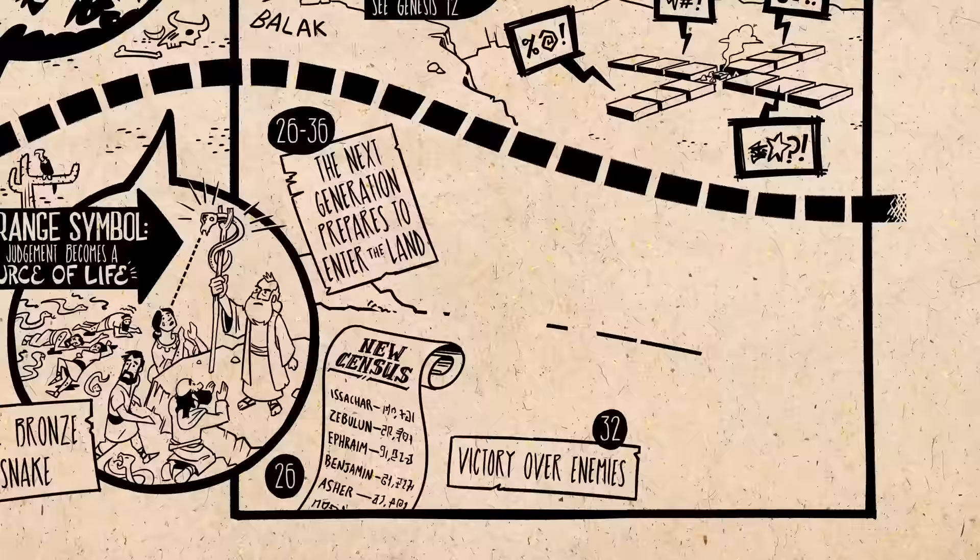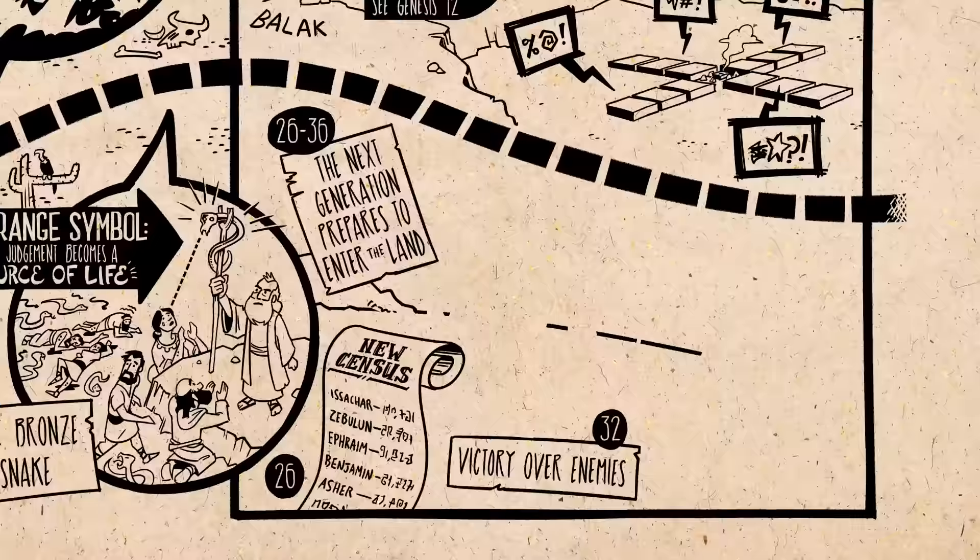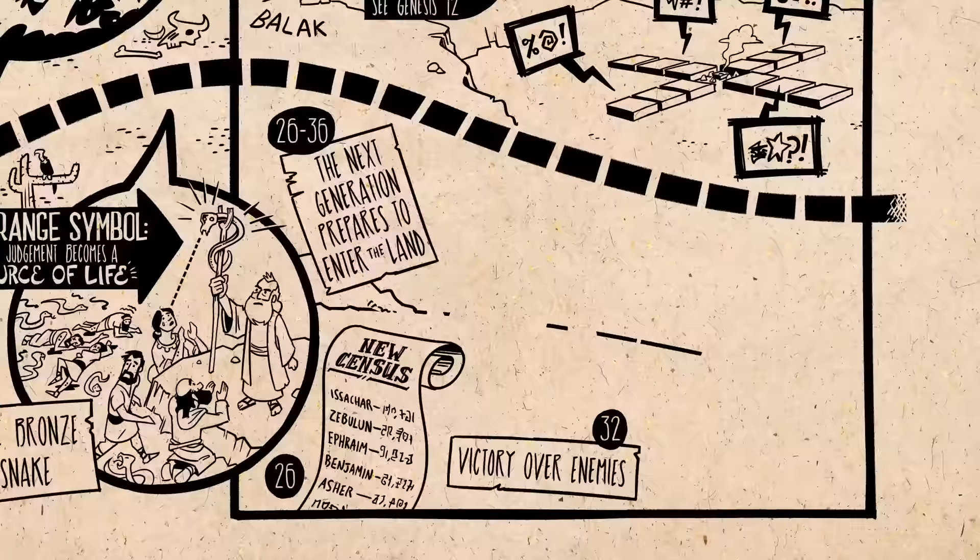After this, the rest of the book focuses on the children of the wilderness generation as they begin preparing to inherit the promised land. They take another census of the new generation, then go on to win a number of battles with the people groups around them, and a few tribes even begin to settle in the promised land. The book ends with the new generation poised to enter the land, and Moses about to deliver his final words of wisdom and warning. But for now, that's what the Book of Numbers is all about.